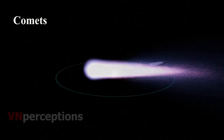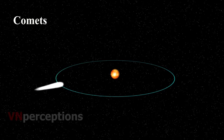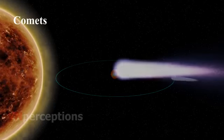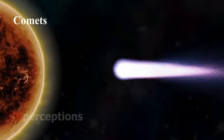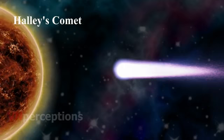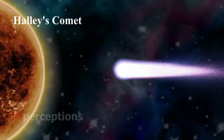Then it is comets. Comets are also members of our solar system as they revolve around the sun in highly elliptical orbits. However, their period of revolution around the sun is usually very long. A comet appears generally as a bright head with a long tail. The length of the tail grows in size as it approaches the sun. The tail of a comet is always directed away from the sun. Many comets are known to appear periodically. One such comet is Halley's comet, which appears after nearly every 76 years. It was last seen in 1986.